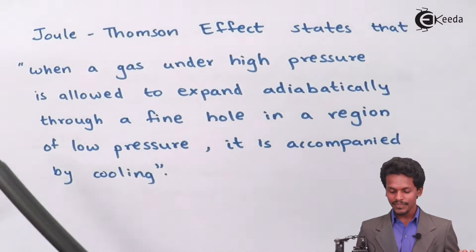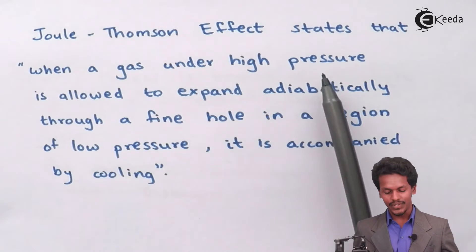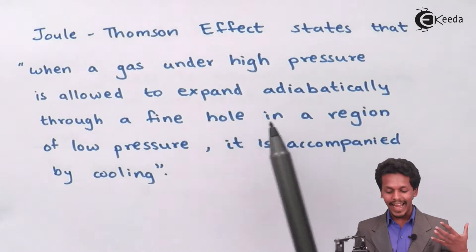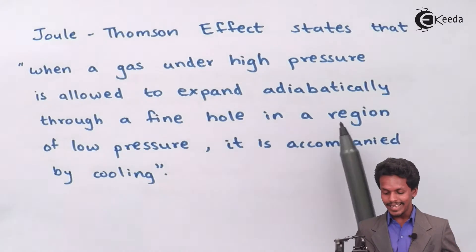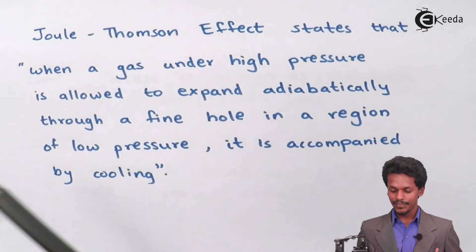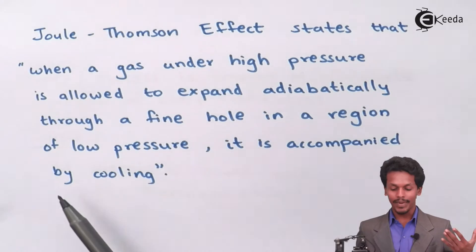Joule-Thomson effect is when a gas under high pressure is allowed to expand adiabatically through a fine hole in a region of low pressure. It is accompanied by cooling.